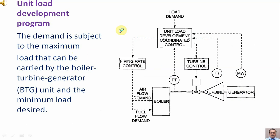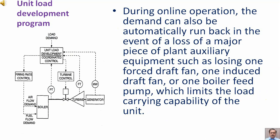The demand is subject to the maximum load that can be carried by the boiler-turbine-generator unit and the minimum load desired. During online operation, the demand can also be automatically run back in the event of a loss of a major piece of plant auxiliary equipment, such as losing one forced draft fan, one induced draft fan, or one boiler feed pump, which limits the load carrying capability of the unit.